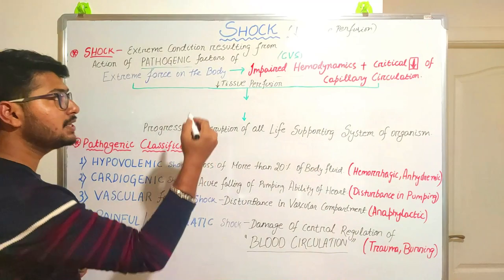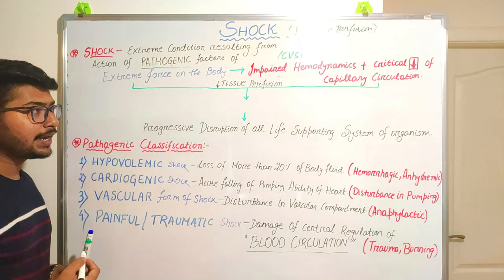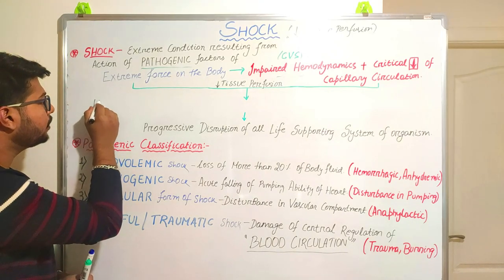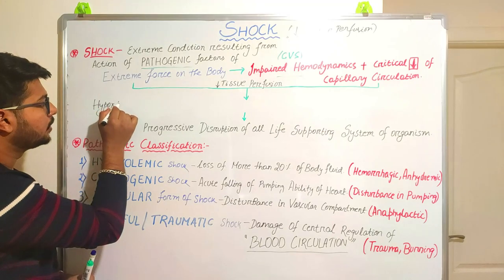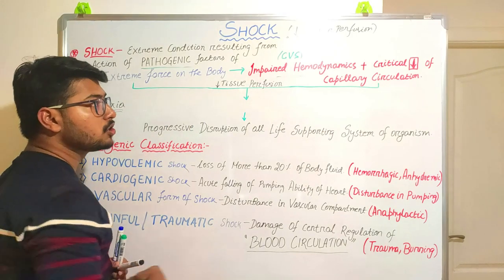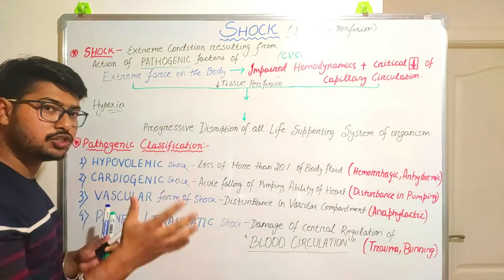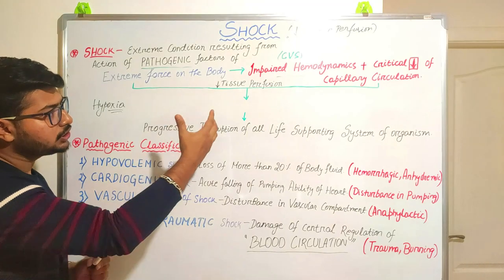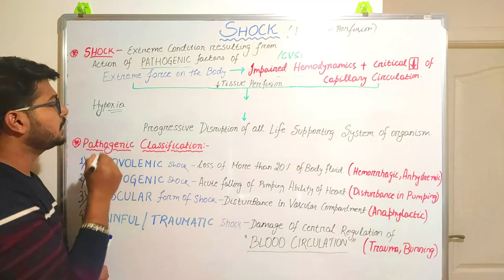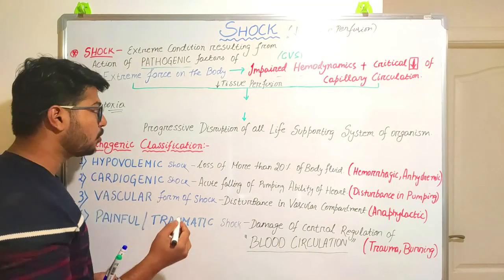What happens when tissue perfusion decreases? If the tissue is not getting enough blood, it means that it will be leading to hypoxia. The tissue is not getting enough blood because the heart is not pumping that much blood to each organ. So there will be tissue hypoxia — a lesser amount of oxygen supplied to the tissue, causing hypoxia.